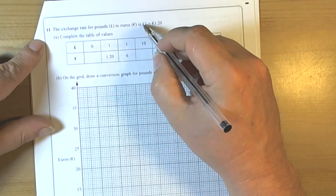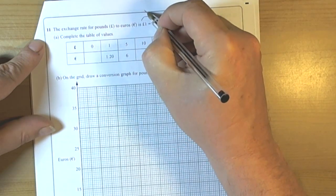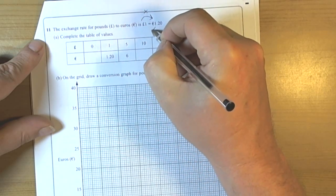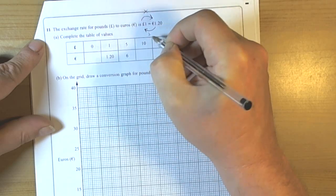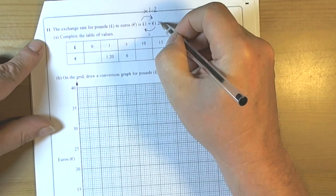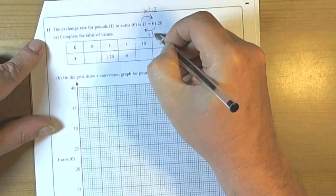So to get from pounds to euros we're going to have to multiply. If we want to get from euros back to pounds then we need to divide. So we would multiply by 1.2 to get from pounds to euros, and if we need to get back from euros to pounds we would divide by 1.2.